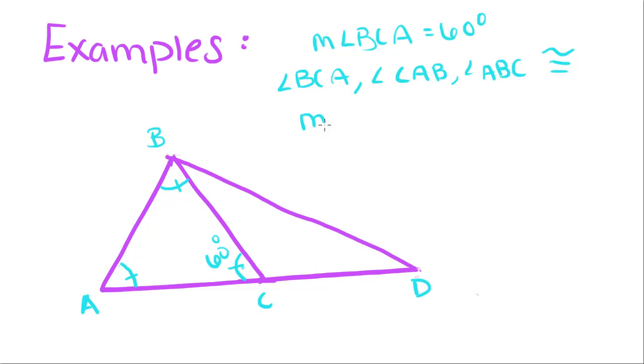We know that the measure of angle CAB is also 60 degrees, and the measure of angle ABC is 60 degrees as well. So, this is 60 degrees, and this is 60 degrees.